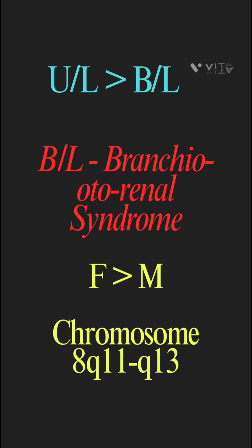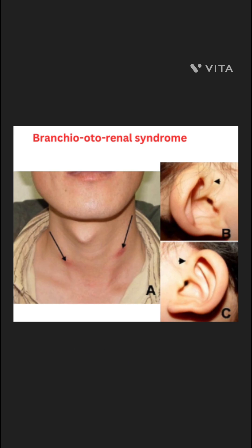The right side is more often involved, and females more than males. There is an association of a possible locus for congenital preauricular fistula to chromosome 8q11 and q13. In bilateral cases, there is an association with many syndromes, the commonest being branchio-oto-renal syndrome, which has autosomal dominant inheritance. Hearing assessment and renal ultrasound are recommended in these cases.